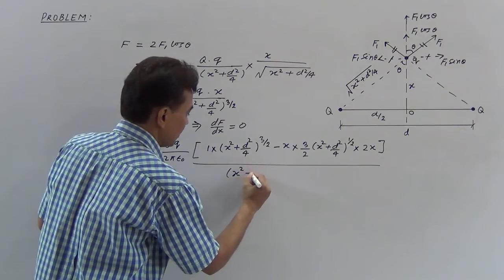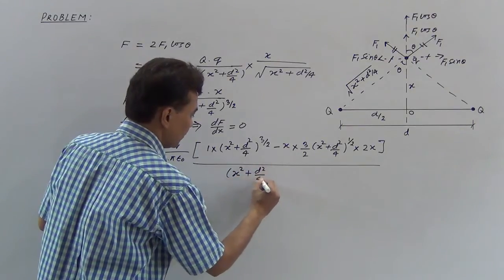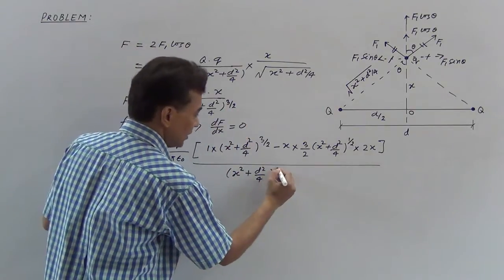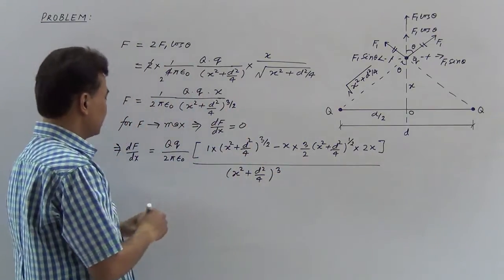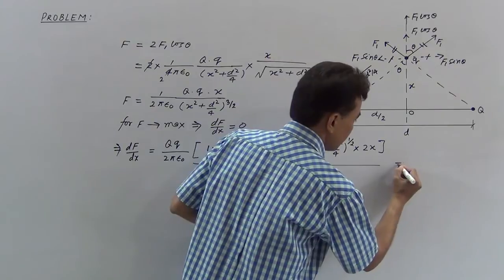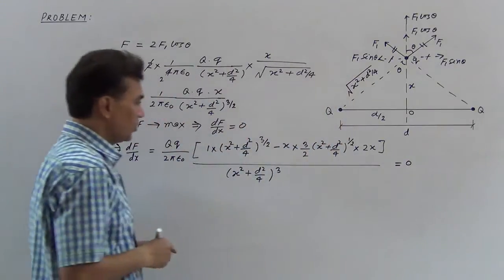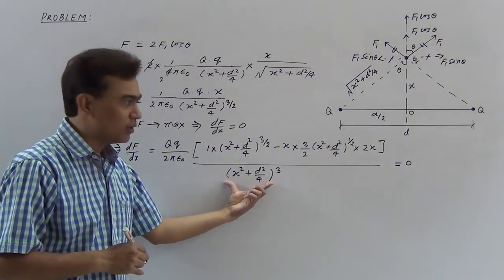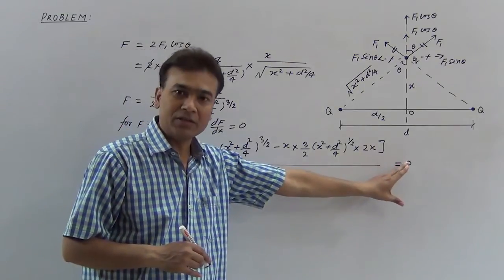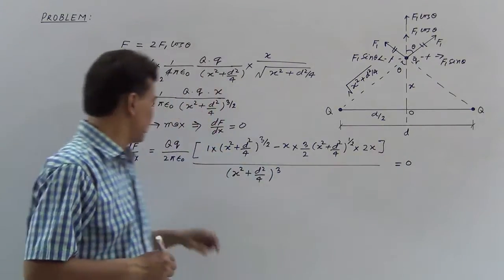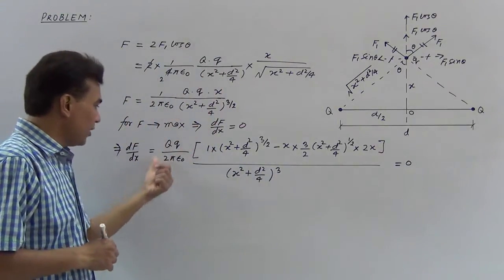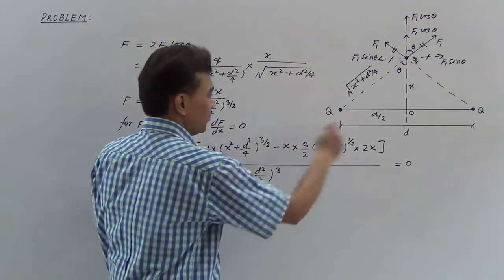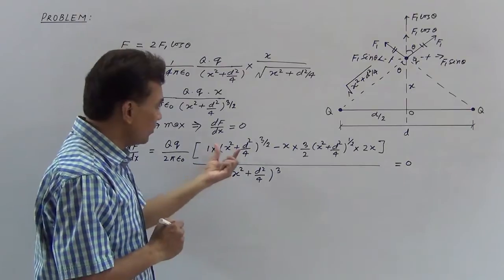Simplifying: the numerator becomes (x² + d²/4)^(3/2) minus 3x²(x² + d²/4)^(1/2), all divided by (x² + d²/4)^3. Setting this equal to zero, and noting the denominator cannot be zero, we focus on the numerator bracket. A common factor of (x² + d²/4)^(1/2) can be taken out.